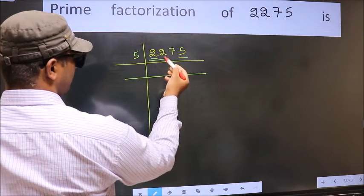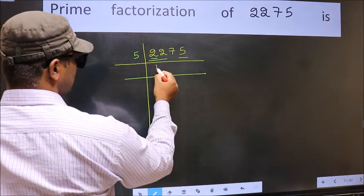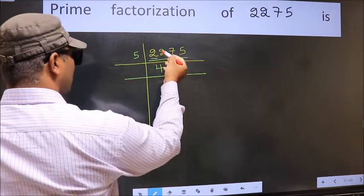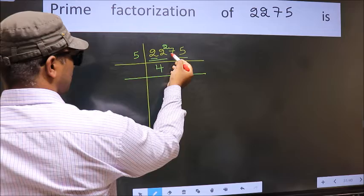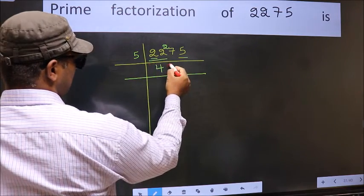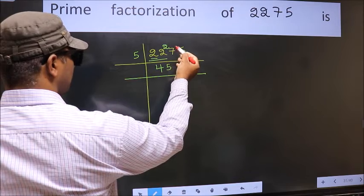A number close to 22 in 5 table is 5 fours, 20. 22 minus 20 is 2, 2 carried forward. 27. A number close to 27 in 5 table is 5 fifths, 25. 27 minus 25 is 2.